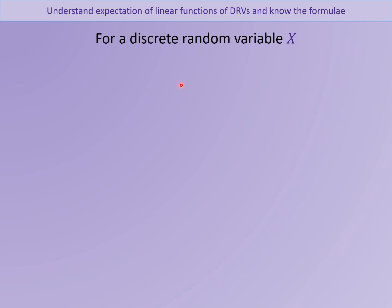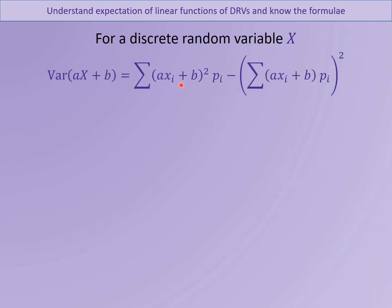We're now going to do something similar for the variance — a slightly more complicated calculation. You don't need to memorise this; it's just so you can see where the formula comes from. The variance of AX plus B equals the expected value of (AX plus B) squared minus the expected value of (AX plus B) all squared. Expanding the bracket gives these terms, and we note that the expected value of AX plus B is what we found on the previous slide.